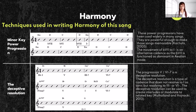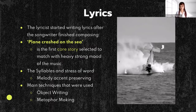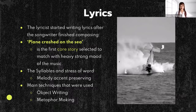Moving on to the lyrics: this song was created in its musical parts first, and the lyrics were composed after. The core story of the song is a plane crash on the sea, which matched the heavy strong mood of the arrangement. The first thing to consider when writing lyrics in English is the syllable and stress of the word, preserving the accent of the melody — which is quite challenging. The main techniques used in writing lyrics are object writing and metaphor making.